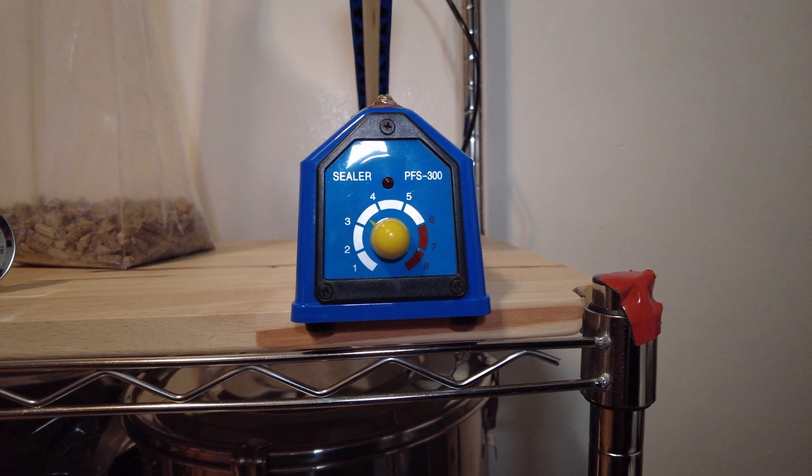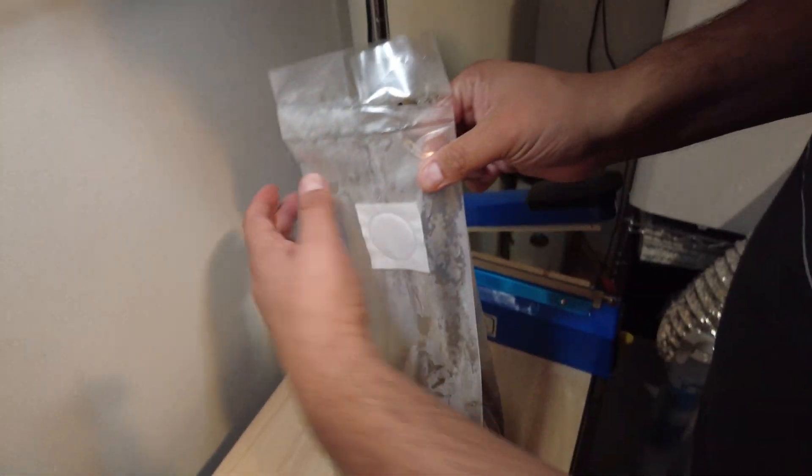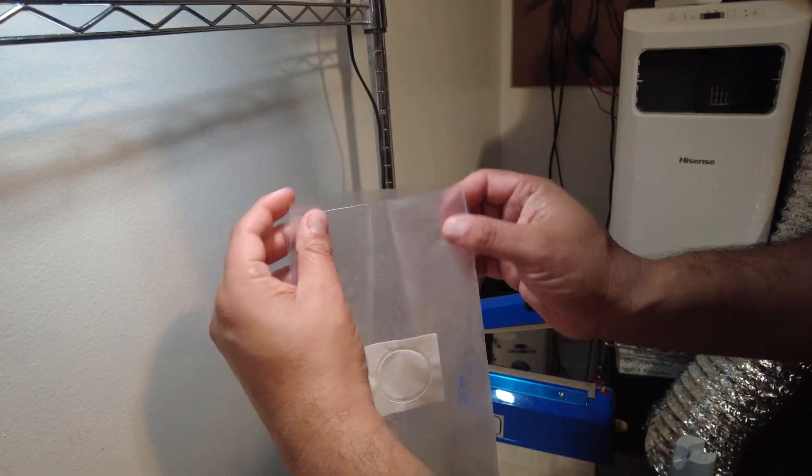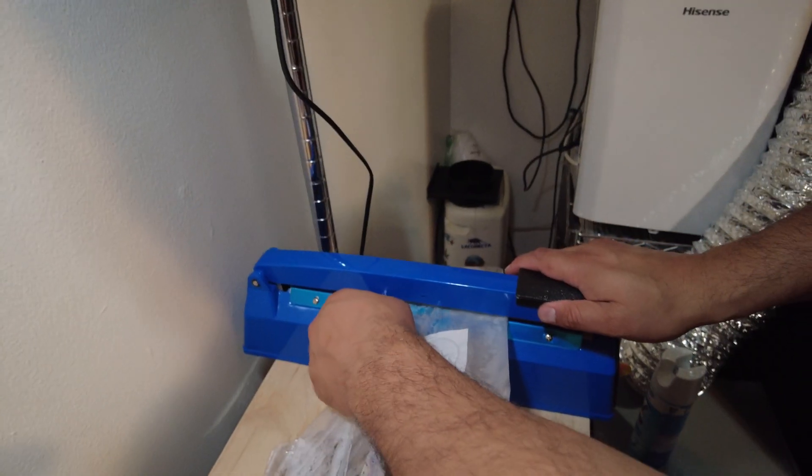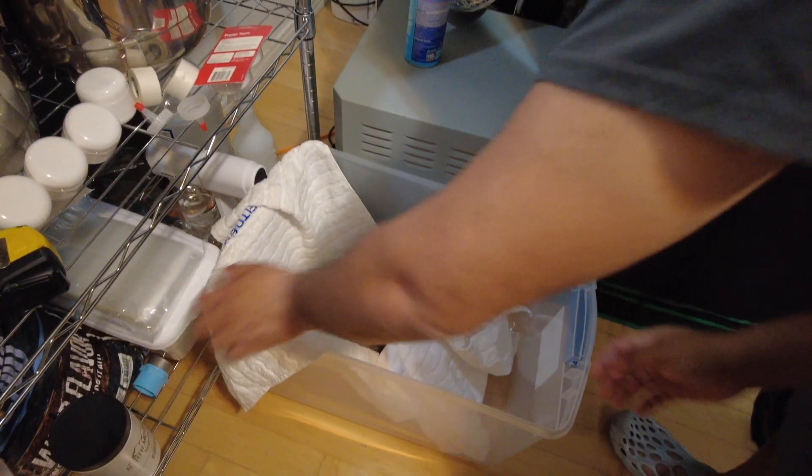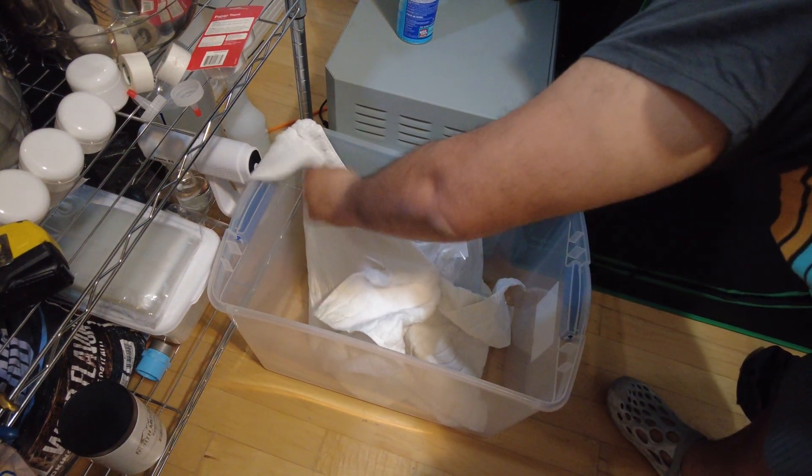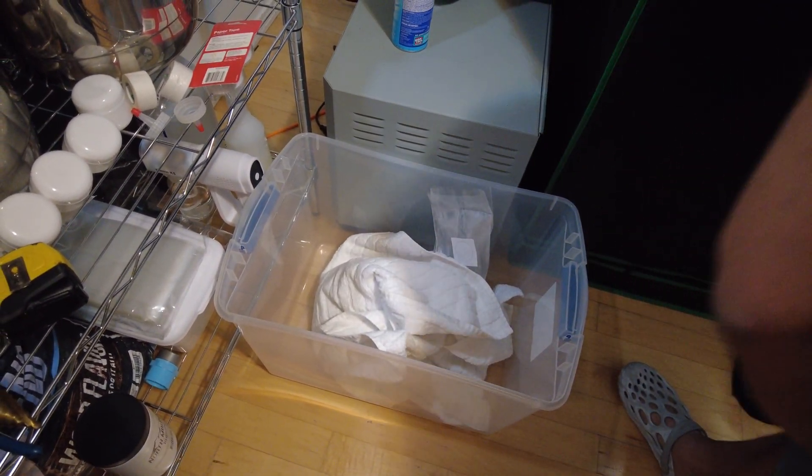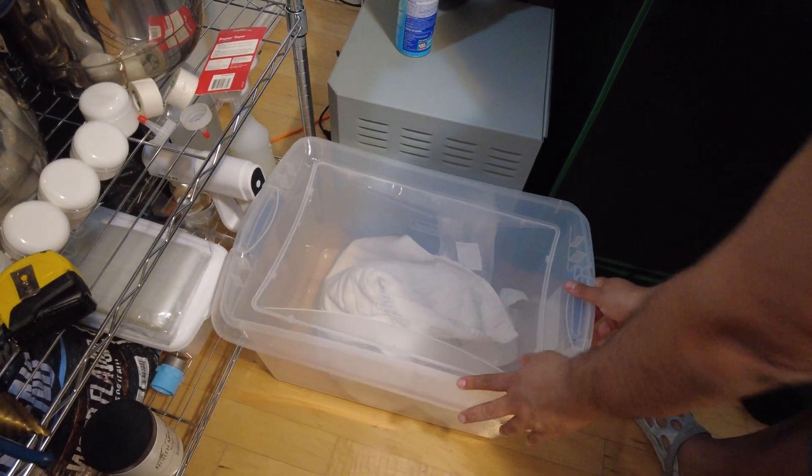This time it's at 3.5. That seemed to work pretty good. I got my practice in and the second bag of grow medium was cake. I wrapped the bags in a towel to insulate them and also prevent the heat from escaping too quick. I then placed them in a storage bin container and closed the lid. I'm going to leave them in there for a whole day.